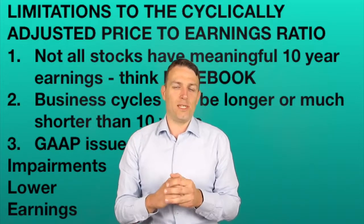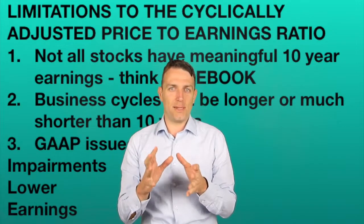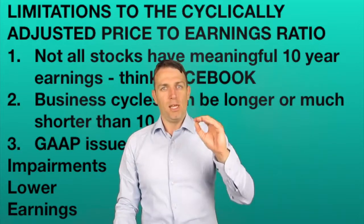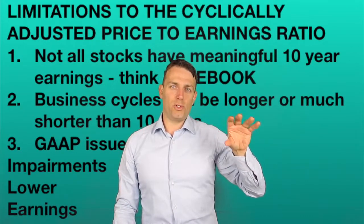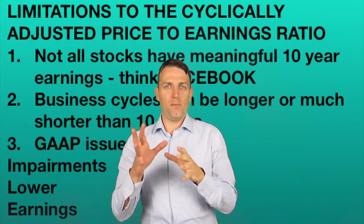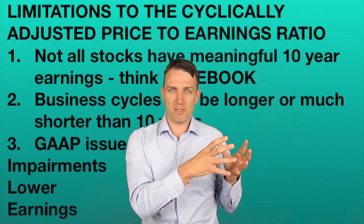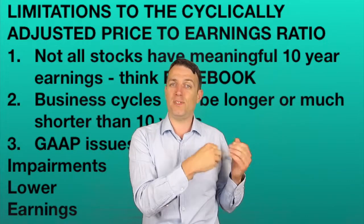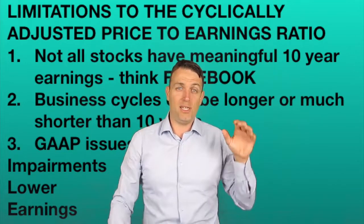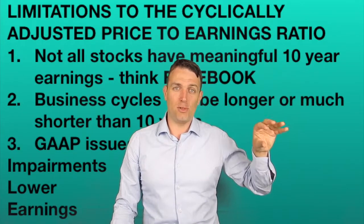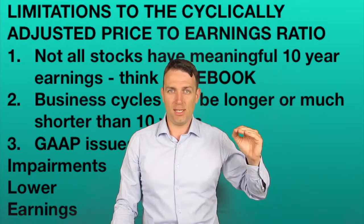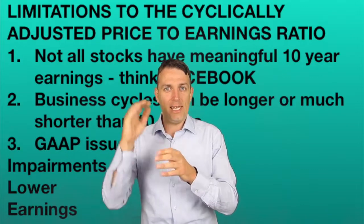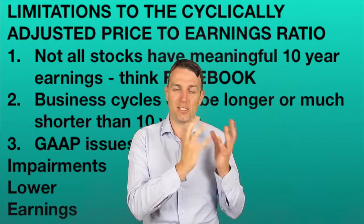Thirdly, and this is more an accounting principle, the generally accepted accounting principles skew stock earnings. Because when you have an asset, you usually don't revalue it on the upside. But if a company bought a building 50 years ago, that building is now 10 times more valuable than it is on the books. If it's not revalued, it can sit on the books at zero — fully depreciated — but it can have huge real value. So those earnings are not in an income statement until a building like that is sold.